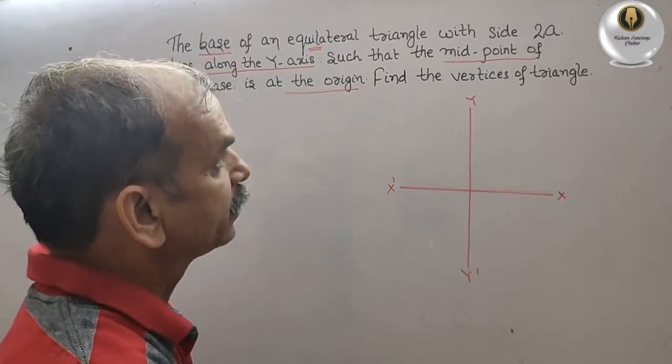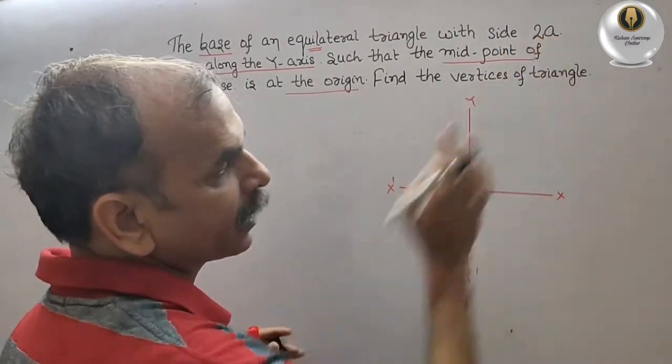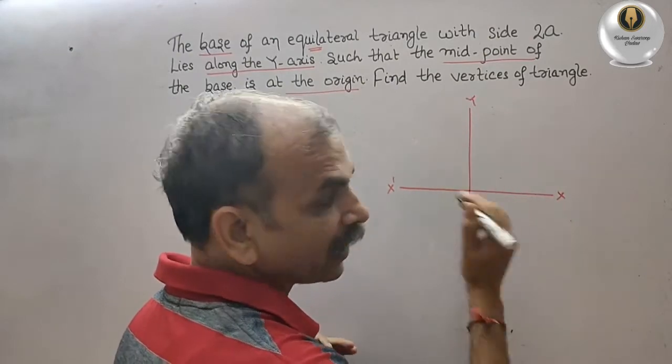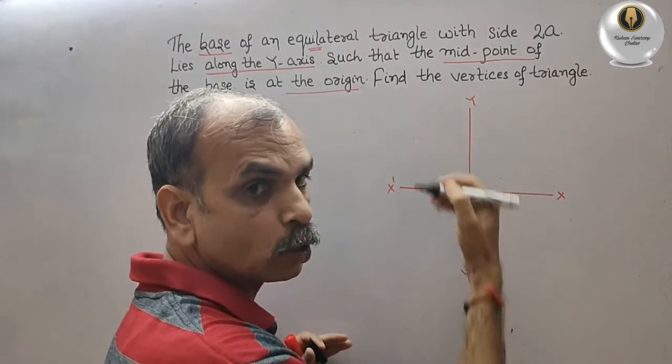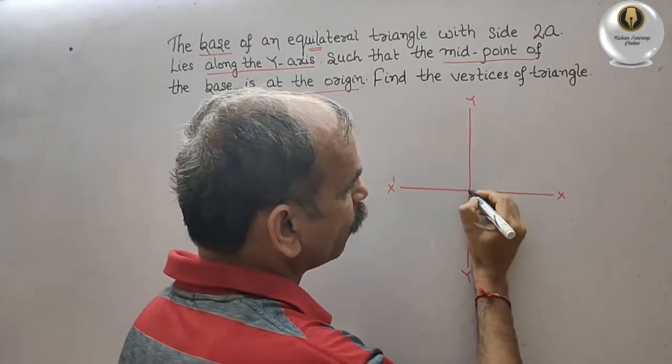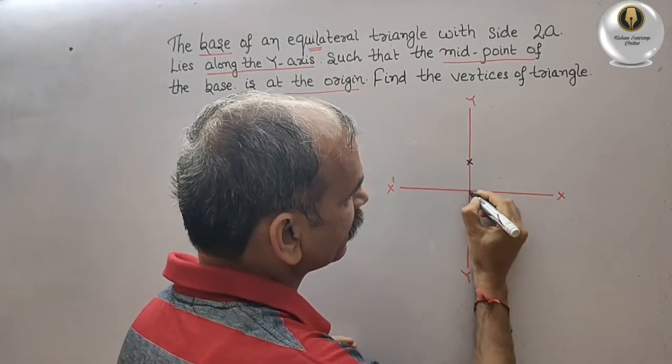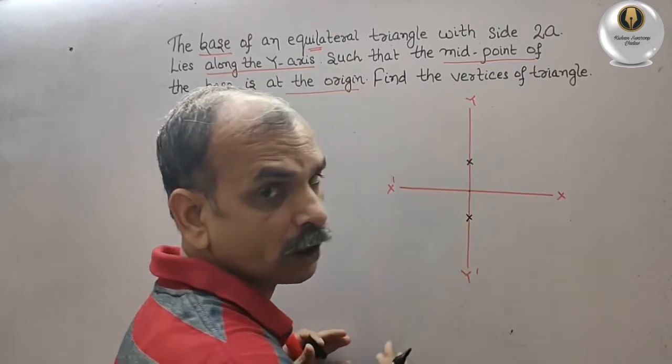The midpoint of the base is at the origin. That means side is your 2a. So if this is mid and base lies along the y-axis, that is 2a total length. So what happens? A is this side and one more A is this side. This is the A and this is also A.